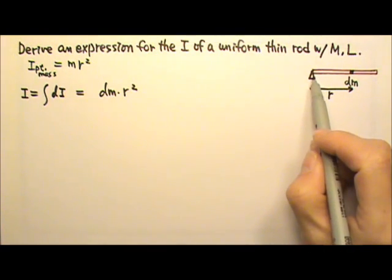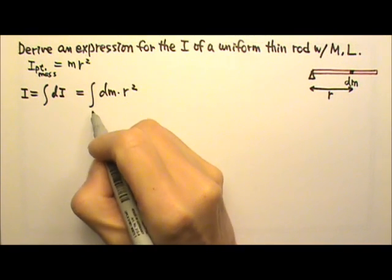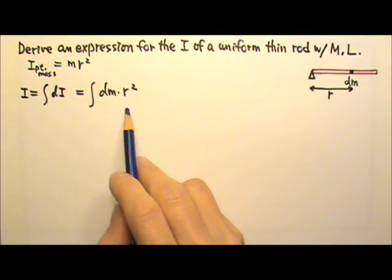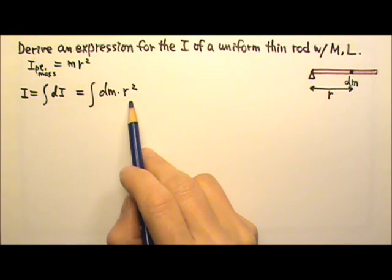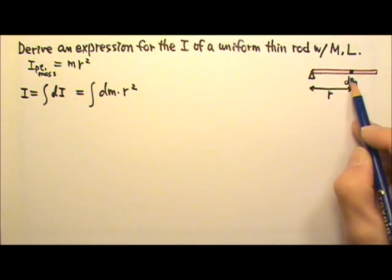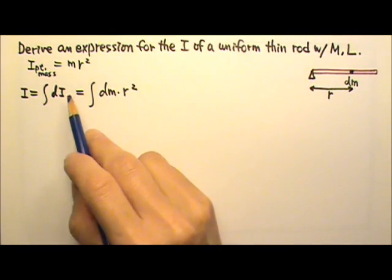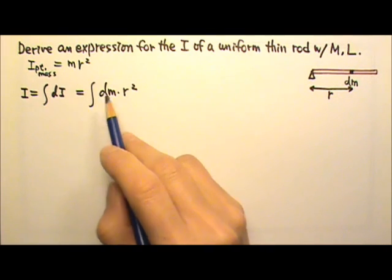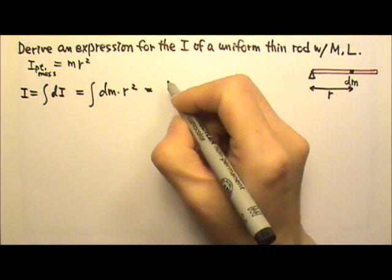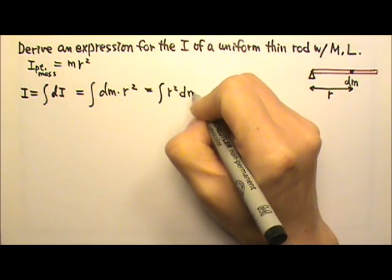And this distance between the axis and the point mass is the r. To find the rotational inertia for the entire rod, we just have to integrate this. To integrate means to add. In this case, the r squared is not a constant because a different dm would have a different r. So we cannot take the r squared out of the integral.